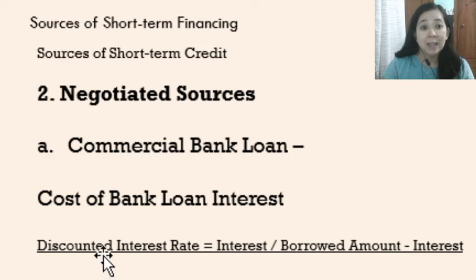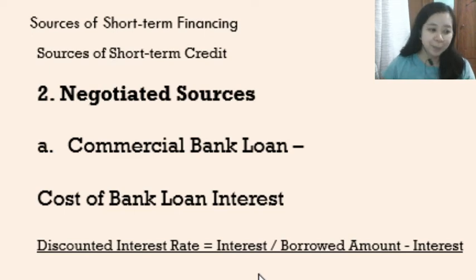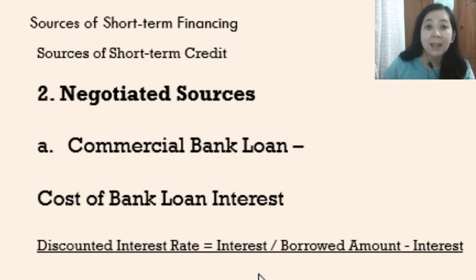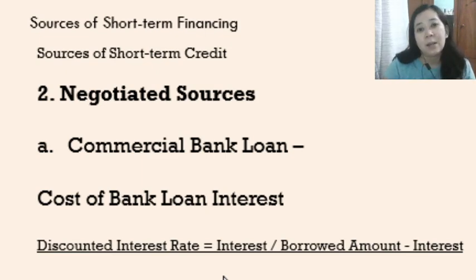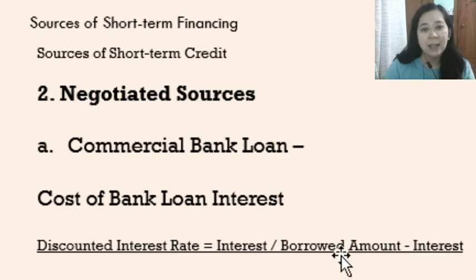The second type of bank loan interest is the discounted interest rate. Here, the proceeds that the borrower receives are already net of the interest deducted from the loan amount. The formula is: interest divided by (borrowed amount minus interest). The cost of bank loan interest ultimately depends on your contract.